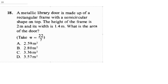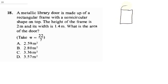Before you can solve this question, you must be able to sketch this. Since it's a rectangular frame, this is what our door looks like. Then on top, there's a semicircle. Notice the width is 1.4 and the height is 2.